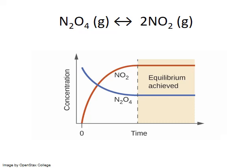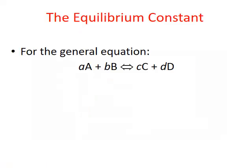Remember this. At equilibrium conditions, we reach steady-state concentrations of our reactants and our products. This doesn't mean equal concentrations — it just means that the concentrations are steady. The equilibrium concentrations, when expressed as a ratio, will give us a constant value, known as the equilibrium constant.